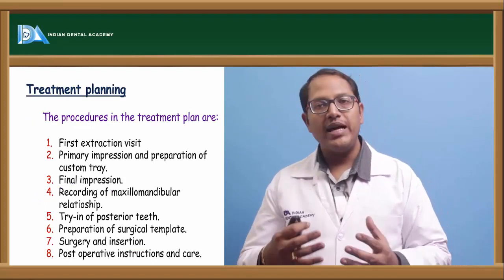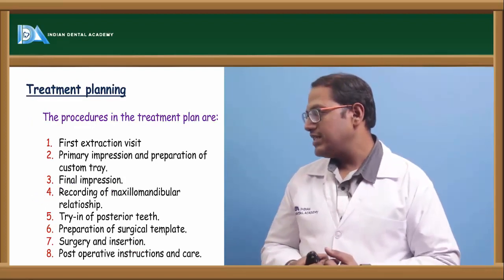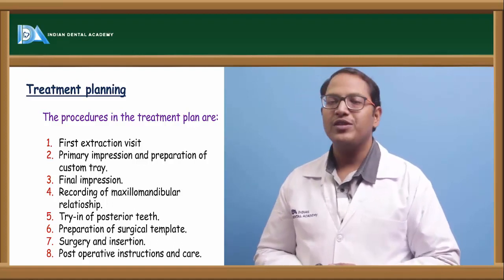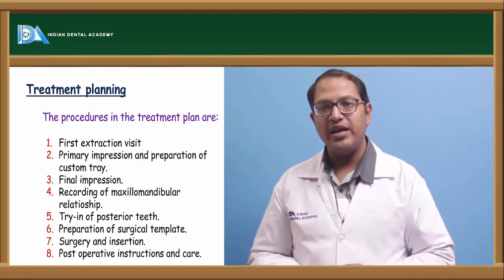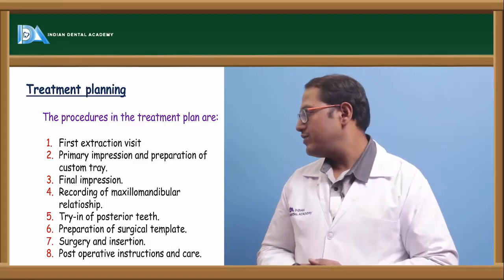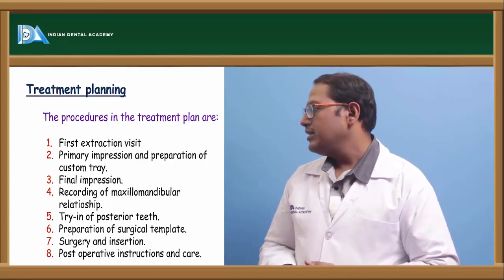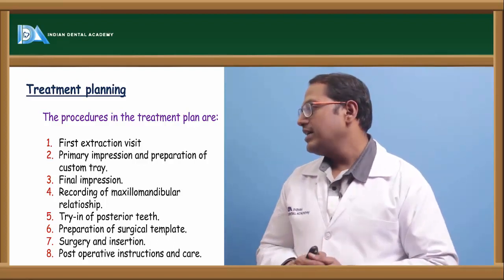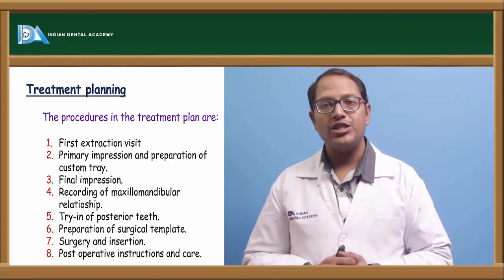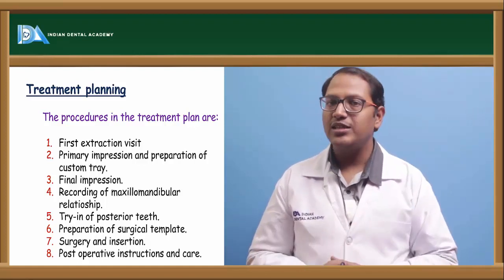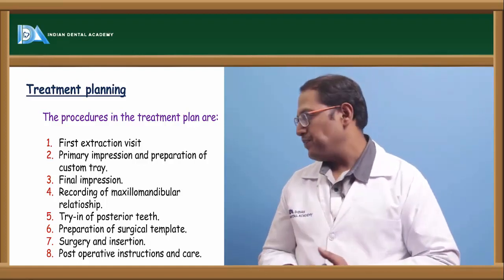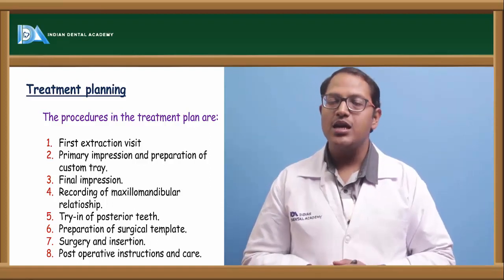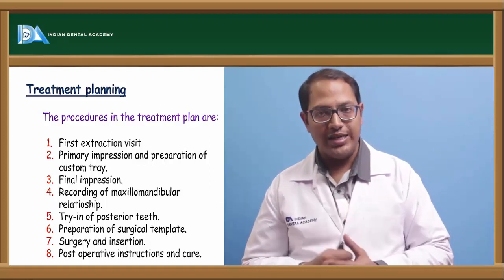Treatment planning sequence: first comes the extraction visit, then primary impression is made and preparation of the custom tray, final impression is made, jaw relation of the patient is recorded, trying is done, preparation of the patient for surgery on the day, and insertion of the immediate denture on the same day. Post-operative instructions and care are the most important things for immediate denture patients.